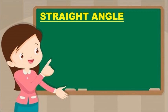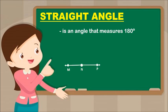Next is Straight Angle. A straight angle measures 180 degrees. This is how it looks like — it is a straight angle. Angle MP is a straight angle.